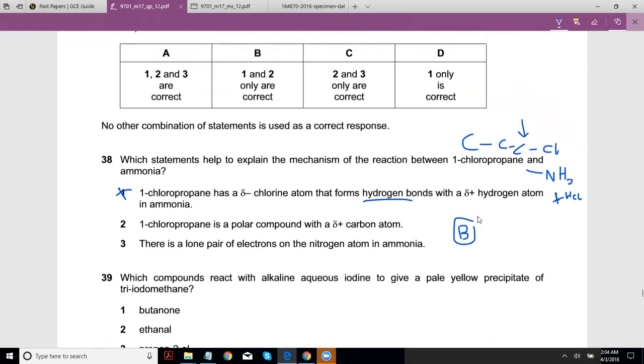No, sorry, C is the correct answer. If one is wrong, then C is the correct answer. But anyway, if you go through it - this is a polar compound with a slightly positive carbon. That is true because this is slightly positive because this is slightly negative, and that is how the nucleophile gets attracted to the carbon. There's a lone pair of electrons on the nitrogen atom - that also helps explain because that allows it to act as a nucleophile. So 38 is C.